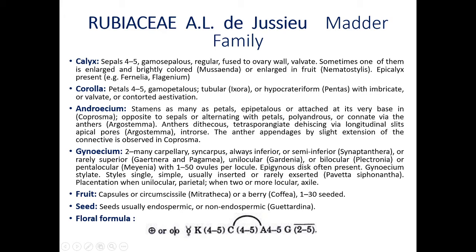Androecium: stamens as many as petals — number of stamens and petals are same. They are epipetalous — stamens are attached to the petals or at the very base of the corolla tube; example: Posoqueria. Opposite to sepals or alternating with petals. Polyandrous — connate via the anthers — meaning they are connate to the gynoecium. Anthers dithecous — cells are two — dithecous, tetrasporangiate. Dehiscing via longitudinal slit. Or dehiscing through apical pores. Introrse. The anther is appendaged by slight extension of the connective, observed in Posoqueria.